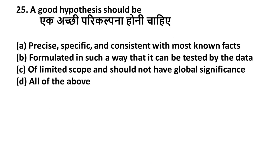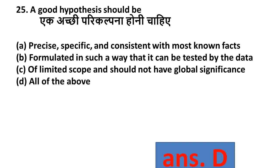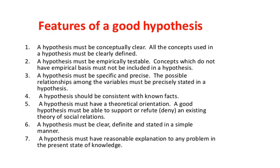Question 25: A good hypothesis should be — Option A: Precise, specific, consistent with known facts; Option B: Formulated so that it can be tested; Option C: Of limited scope; Option D: All of the above. Option D is the right answer. Other characteristics: a hypothesis must be conceptually clear, empirically testable, specific and precise, consistent with known facts, have theoretical orientation, and be stated clearly in a simple manner.